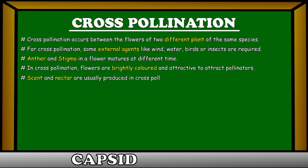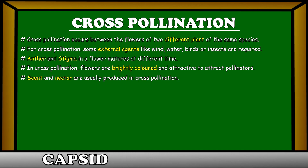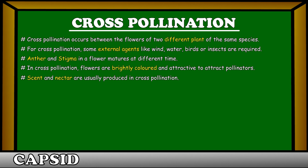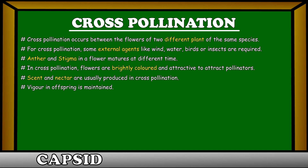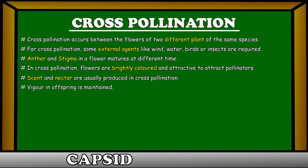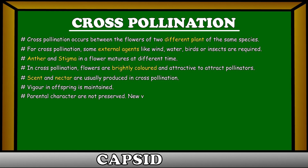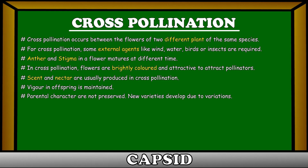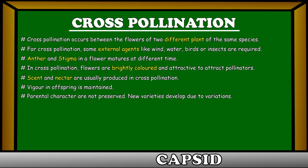Scent and nectar are usually produced in cross-pollination. Vigor in offspring is maintained. Parental characters are not preserved, and new varieties develop due to variations.